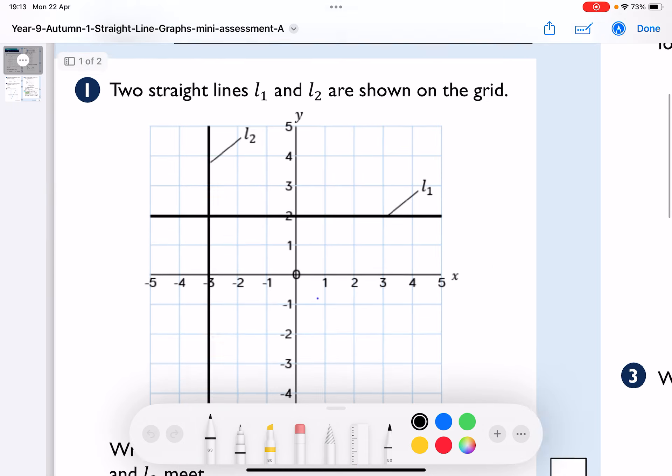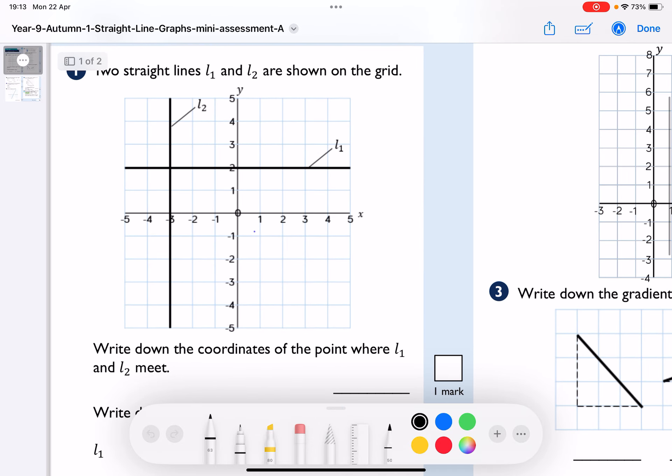Okay, what we've got here, we've got two straight lines, L1 and L2, shown on the grid. Write down the coordinates of the point where L1 and L2 meet, so they meet here. Remember with the coordinates, we're in brackets, we go across first. So that's a negative 3, and then we go up, so what we've got is negative 3, 2, great.